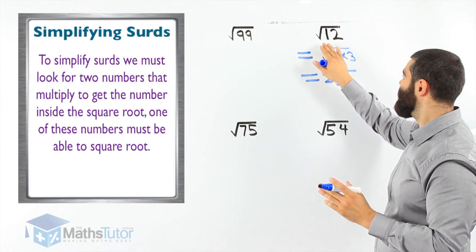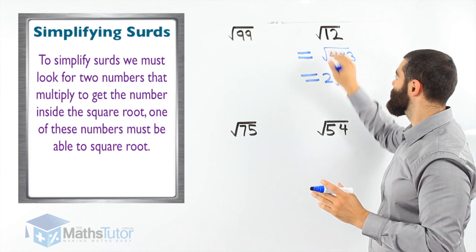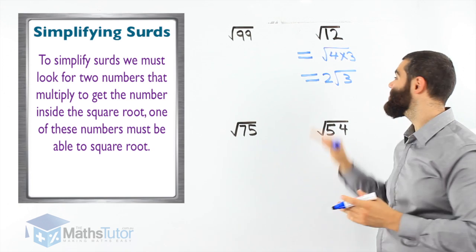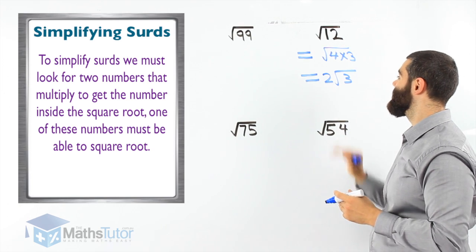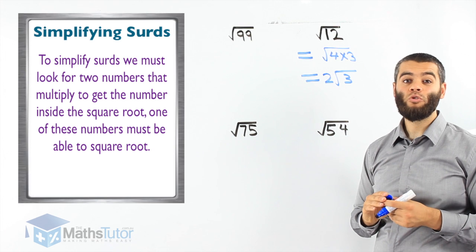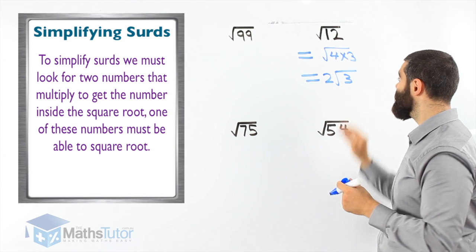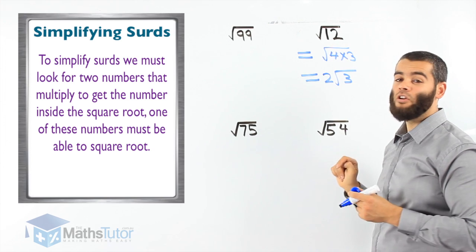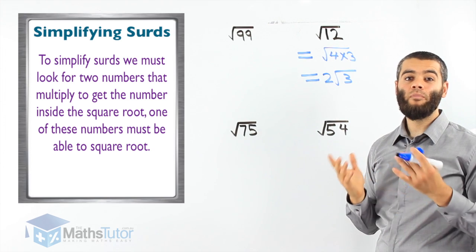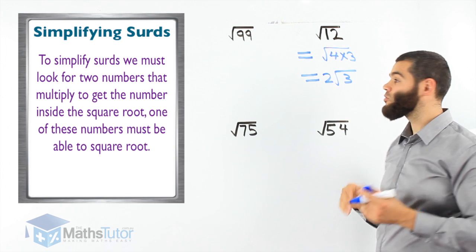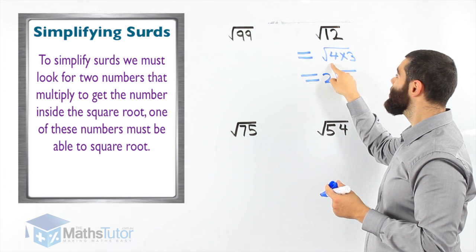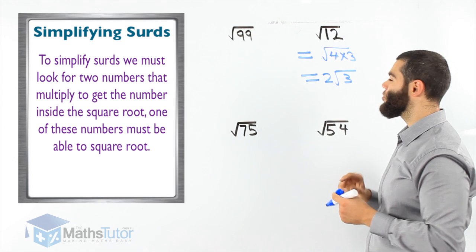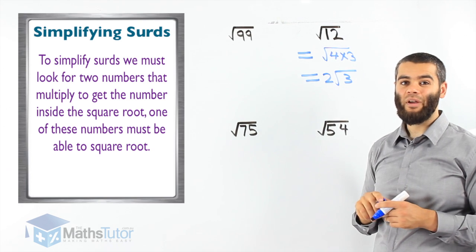2 root 3 is the answer. It has the same value as square root 12 — it's the same answer, but it's simplified. We looked for two numbers; one of them had to square root. 4 times 3 makes 12. The 4 square roots, comes out, becomes a 2. So 2 root 3 is our final answer.